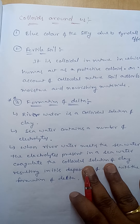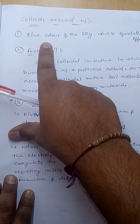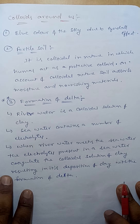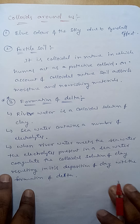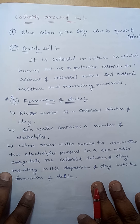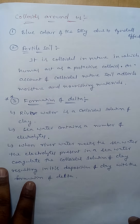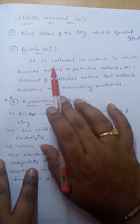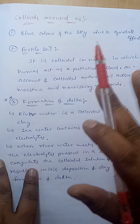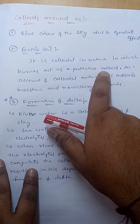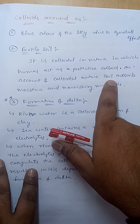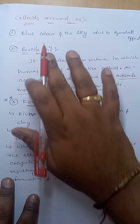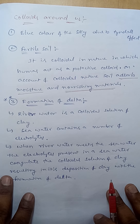The blue color of the sky and the blue appearance of sea water are due to the Tyndall effect. Fertile soil is also colloidal in nature — the humus, the top layer of soil, acts as a protective colloid. On account of its colloidal nature, soil adsorbs moisture and nourishing materials.